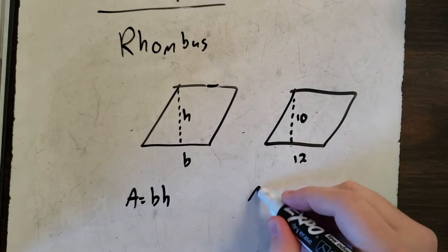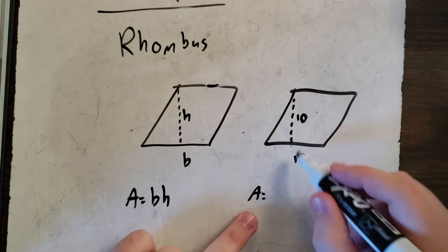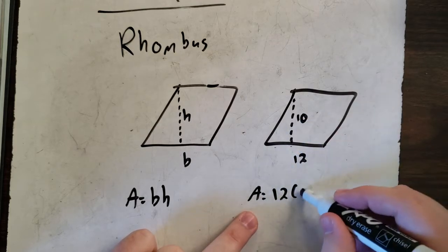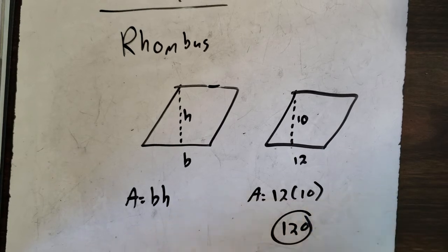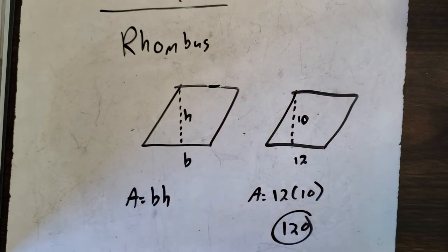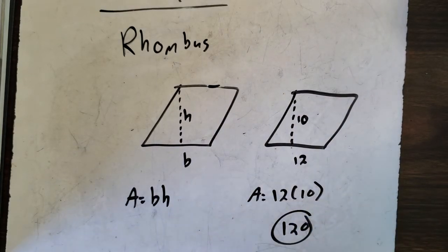Then you multiply. Base times height, ten times twelve is 120. It's all there is to it. It's that simple.